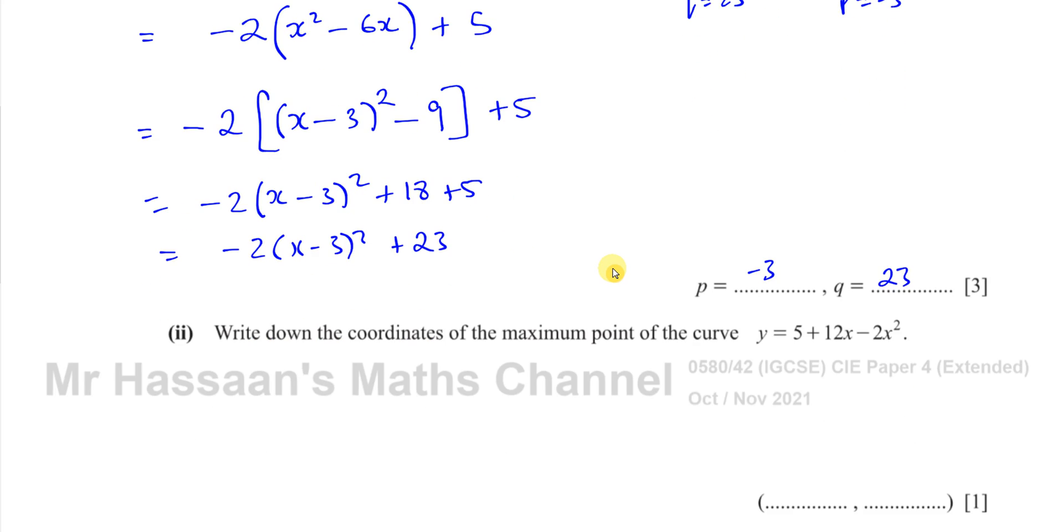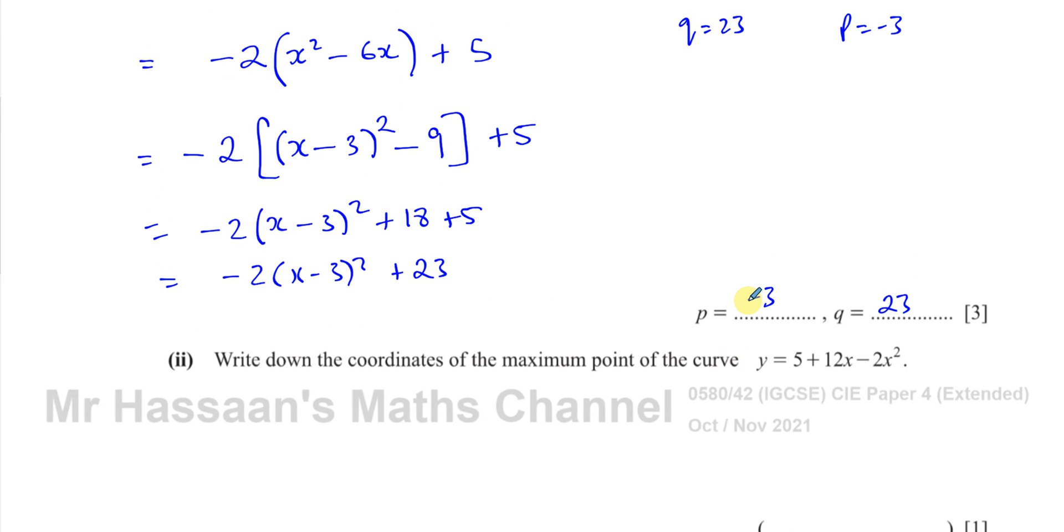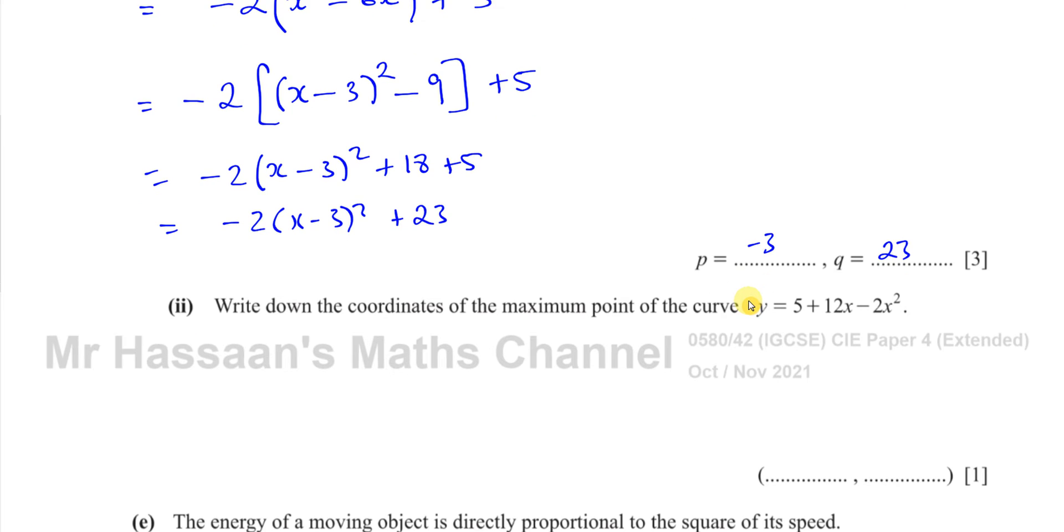So that's part D, part 1. And then it says write down the coordinates of the maximum point on the curve y = 5 + 12x - 2x².